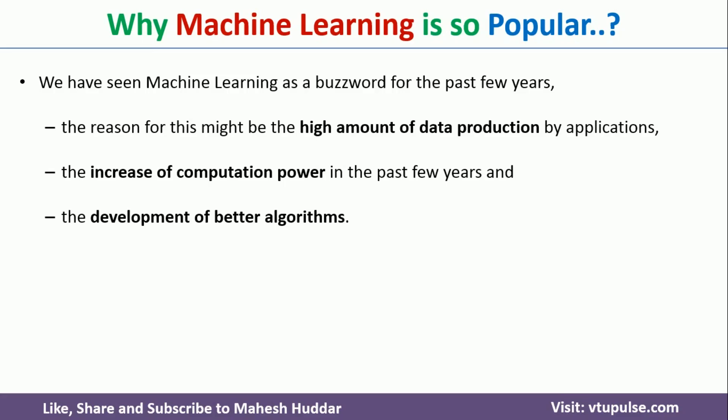The third reason is that because of the availability of data as well as computational power, people are developing better and better algorithms every day. As and when you develop better algorithms, you achieve better results. If you achieve better results, there is a business gain in every organization. As and when the business gain occurs, people will invest a lot of money in this, and new algorithms will evolve every day. These are the three main reasons why machine learning has become such a buzzword and so popular in recent years.